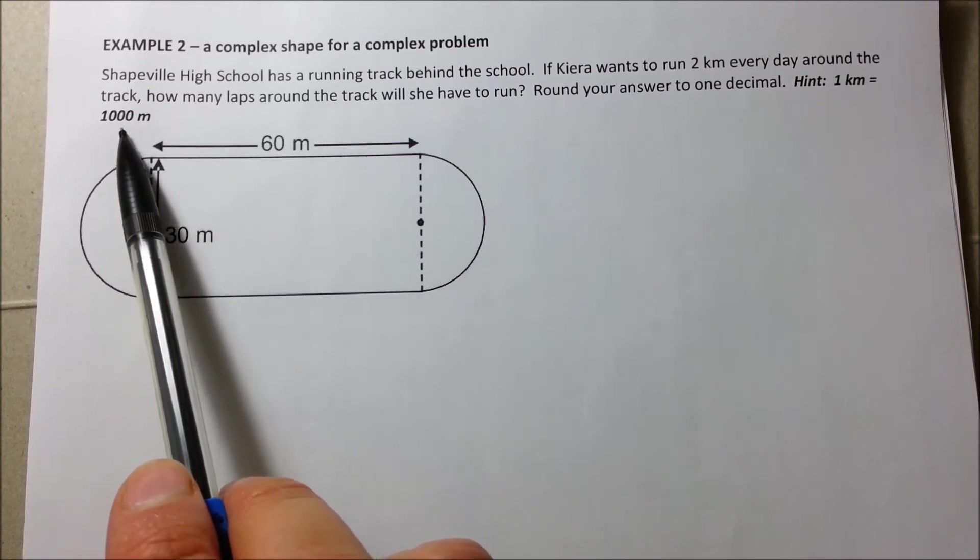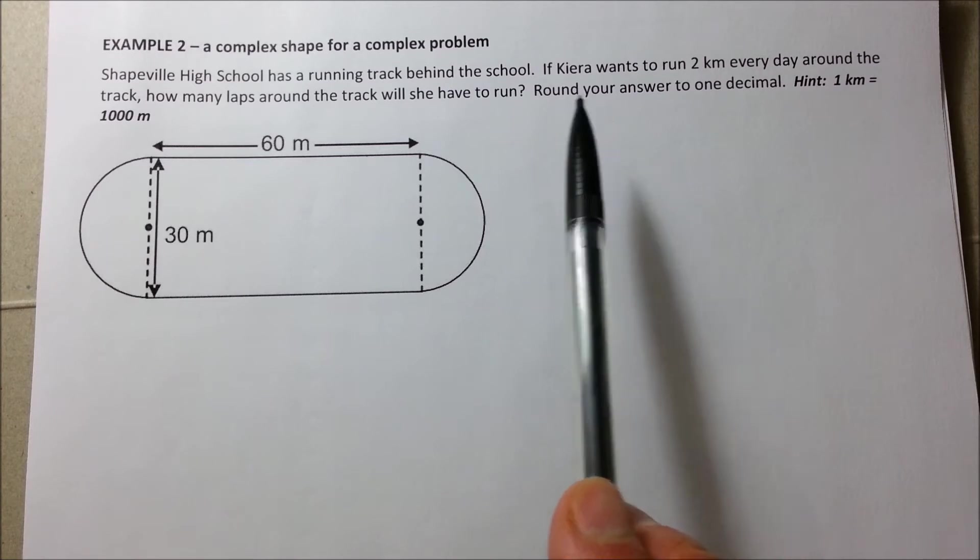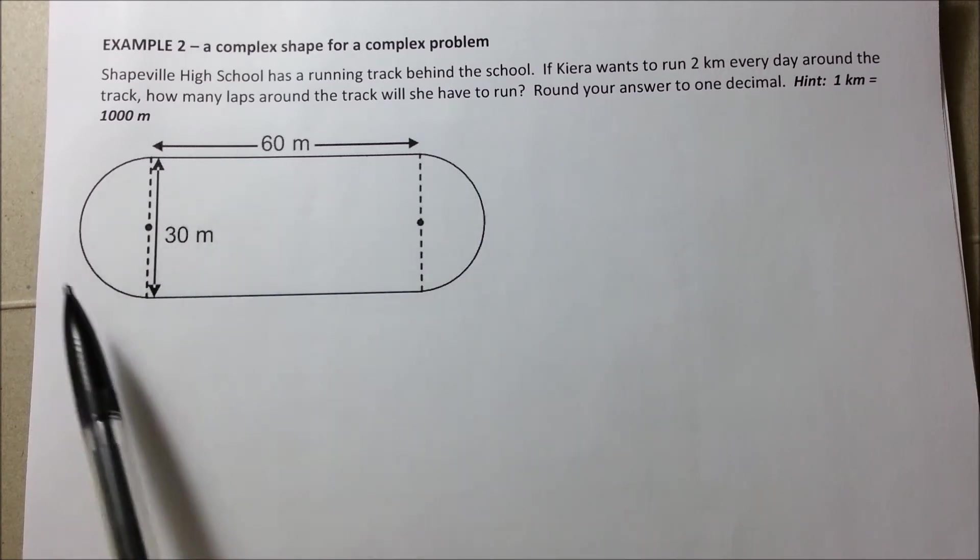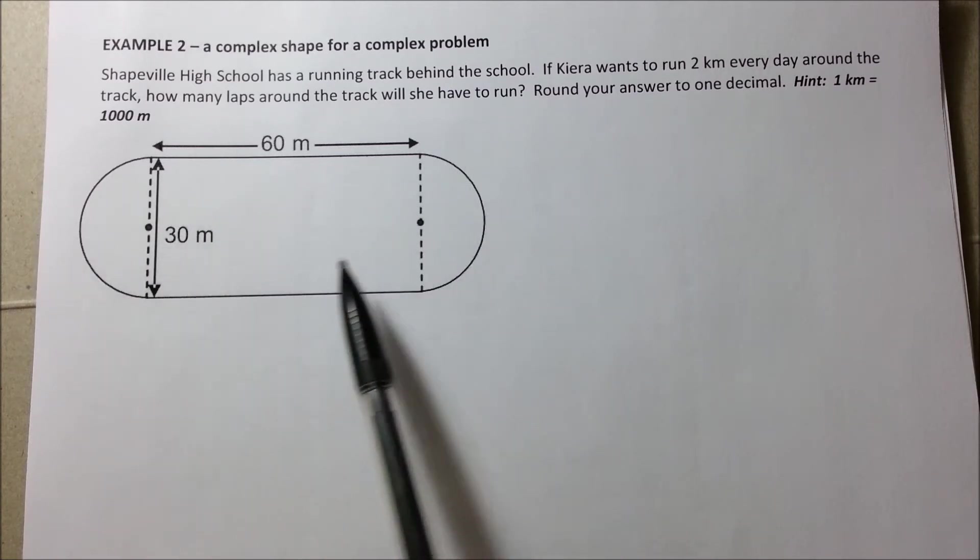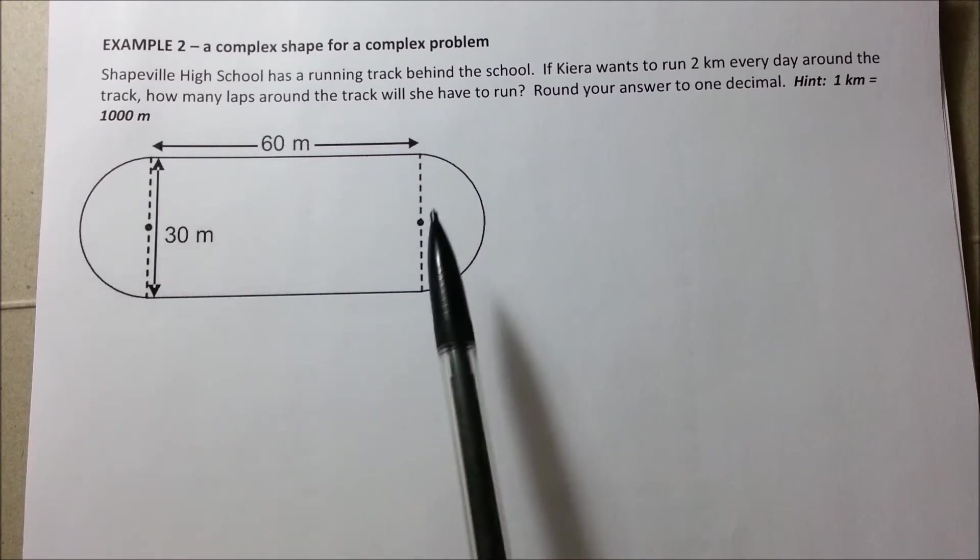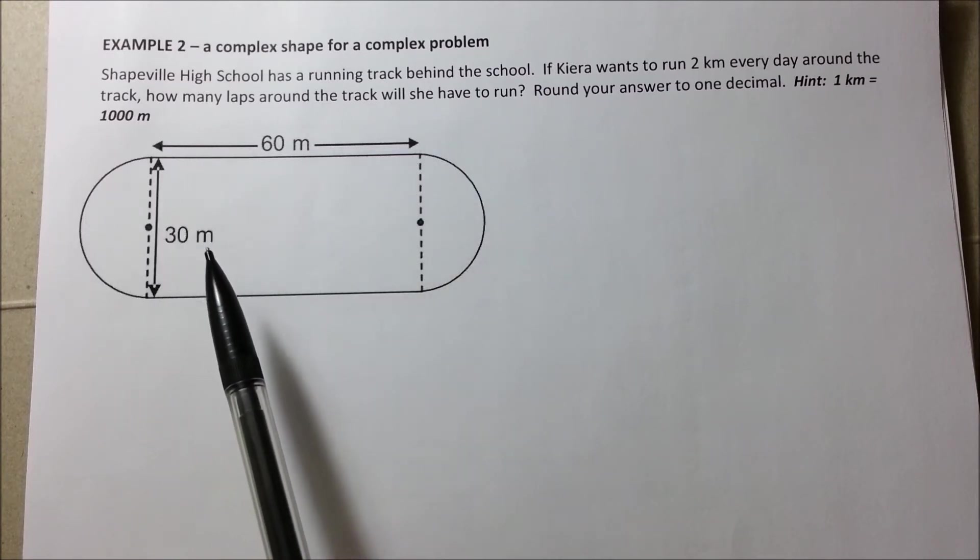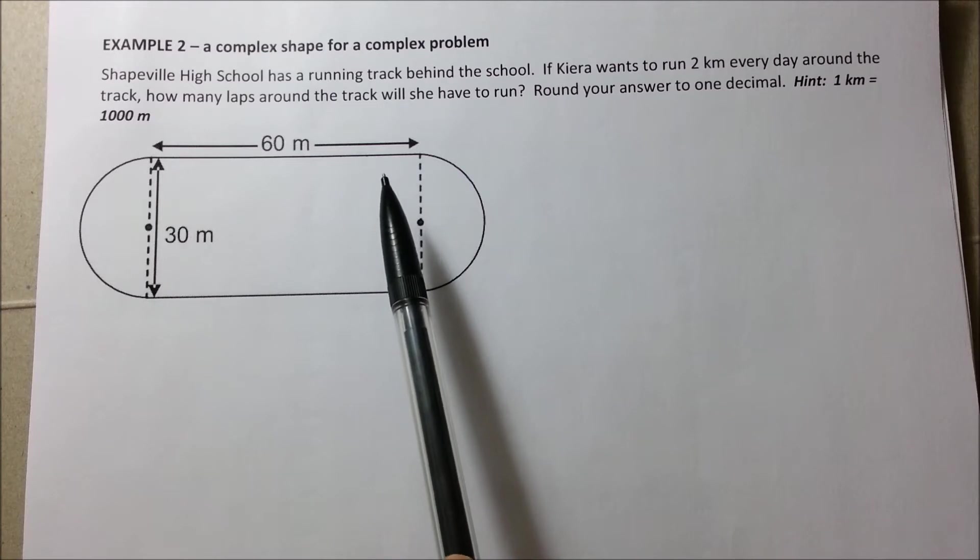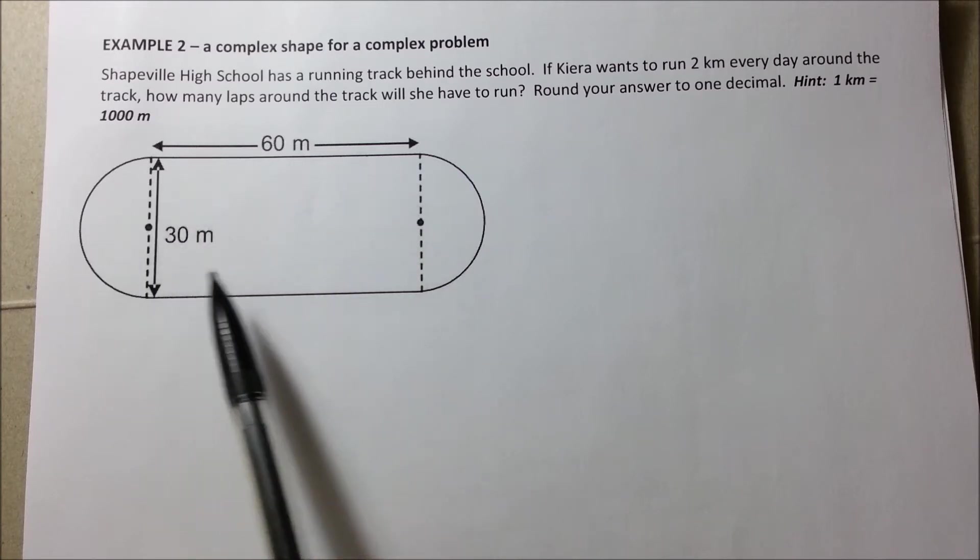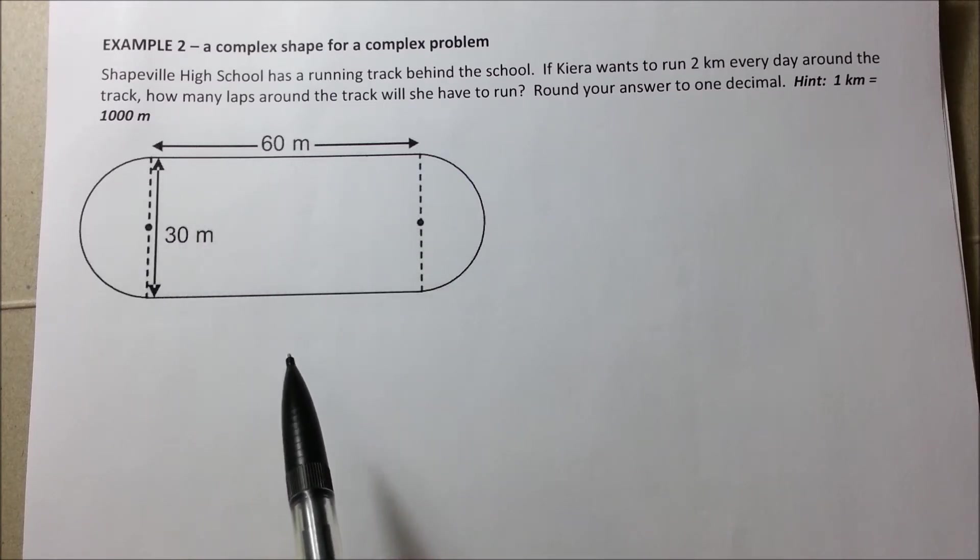2 kilometers will be 2000 meters. So, we want to know how many laps does she need to go around the running track in order to complete or at least get close to 2 kilometers or 2000 meters. So, first we need to find the perimeter of this.